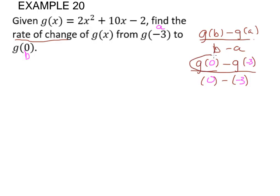What we need to find out is what g is at 0 and what g is at negative 3. So let's set that up. We're going to find g of 0. So we get 2 times something squared plus 10 times something minus 2. All right, so we plug in 0. 0 squared is 0, times 2 is still 0. 10 times 0 is 0 minus 2. So we get negative 2.